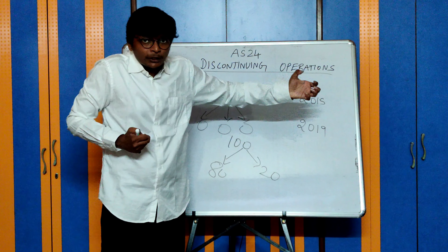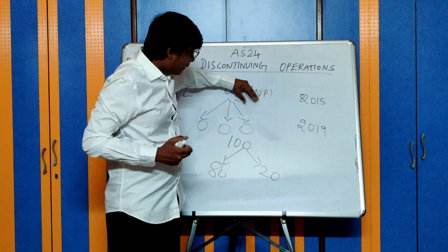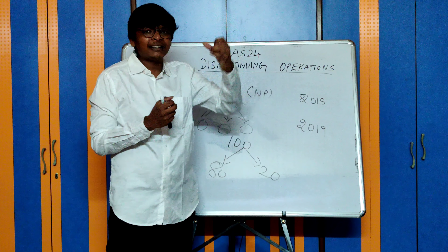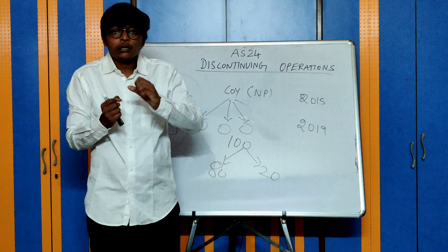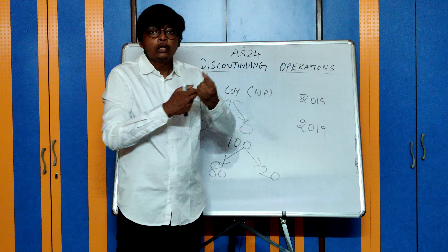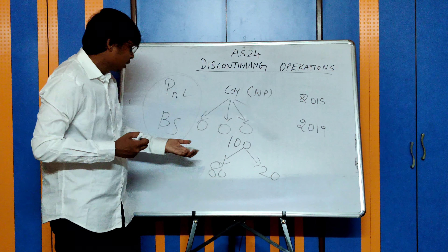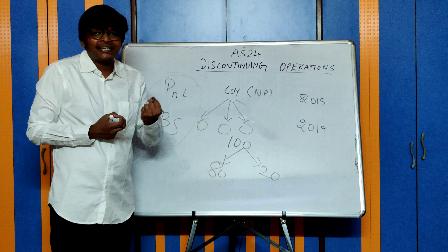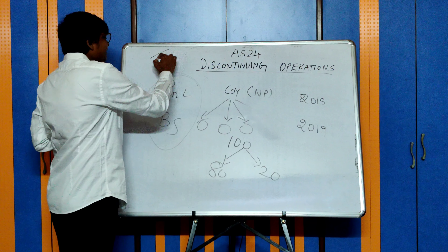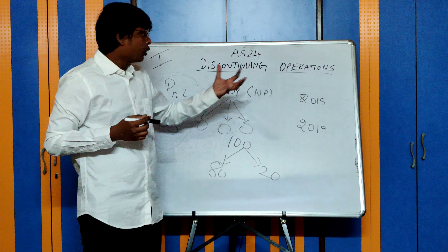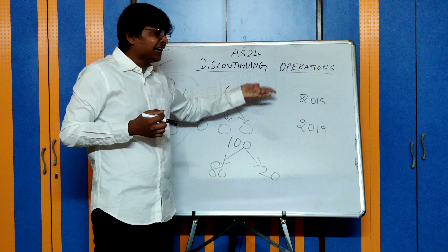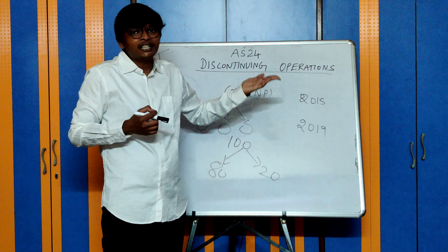This standard tells how to account for a discontinuing operation and how to show a presentation for it, because the normal format is for a company which has going concern. This company is also going to continue, but a part of it is going to be sold. During the period until a buyer is found, what kind of disclosures have to be made so that users will know what is the actual profit they can expect in the future. The very first thing you need to understand is what is a discontinuing operation.